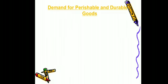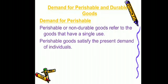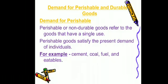Next is demand for perishable and durable goods. Perishable goods — also called non-durable goods — are goods that have a single use, meaning we can use them only once. Perishable goods satisfy the present demand of individuals. Examples include cement, coal, fuel, and eatables — like if we are hungry, we get bread and eat it, so our present demand is satisfied, and it has only a single use.